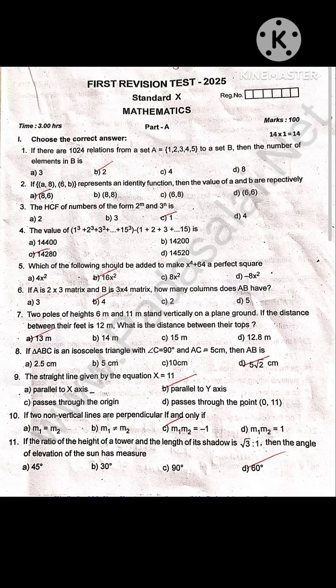Two poles of height 6 meter and 11 meter stand vertically on the plain ground. If the distance between their feet is 12 meter, what is the distance between their tops? 13 meter.